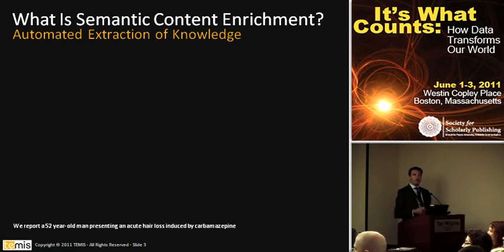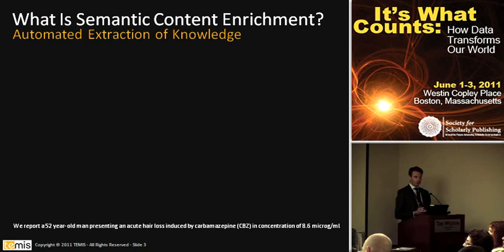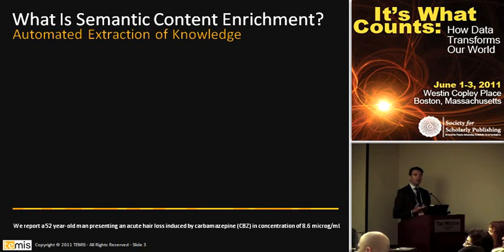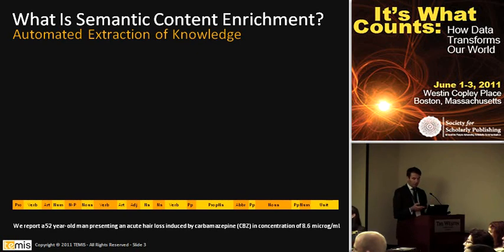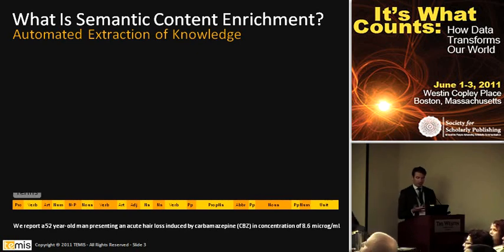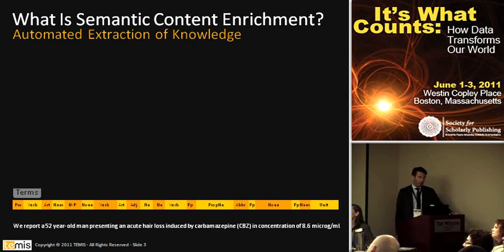Then in the second step, the tool looks at the different terms, it groups them together, and it derives meaning from this. So that's why it starts to be a little bit semantic — that's why you start to have entities. In this case, you have a subject, you have a verb, and then you have entities like a patient, a symptom, a drug, and a dosage.